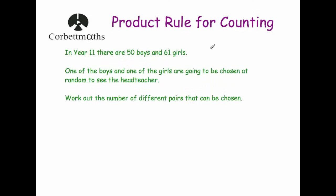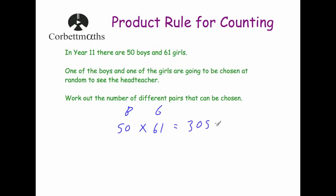Our next question: in year 11 there are 50 boys and 61 girls. One boy and one girl are going to be chosen to see the head teacher. Work out the number of different possible pairs. There are 50 boys to choose from and 61 girls, so we multiply: 50 × 61 = 3,050. There are 3,050 different possible pairings.